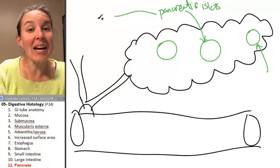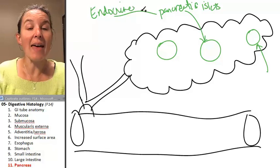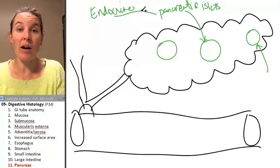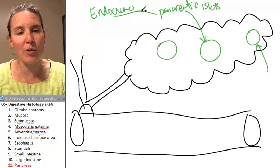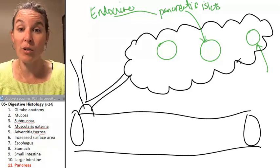And these guys are your endocrine structures and they produce insulin. And they also produce glucagon. But both of those hormones are involved in glucose homeostasis.